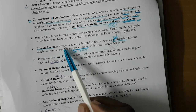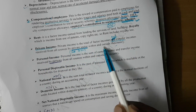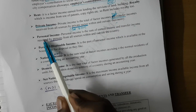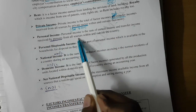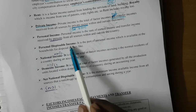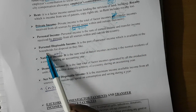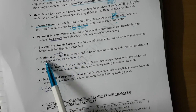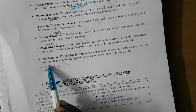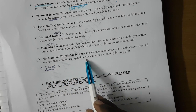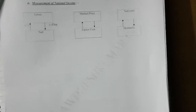Private income is the total of factor incomes and transfer incomes received from all sources by the private sector within and outside the country. Personal income is the sum of earned income and transfer income received by persons from all sources within and outside the country. Personal disposable income is the part of personal income available to households to dispose of as they like. Net national disposable income is the maximum income available from all sources that a nation can spend on consumption and saving during the year.